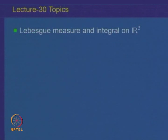Welcome to lecture 30 on measure and integration. In the previous lectures, we had defined the product measure on product space. In this lecture, we will specialize that construction on the set R², which is a Cartesian product of the real line with itself, with the sigma algebra being that of either Borel sets or Lebesgue measurable sets, and the measure being the Lebesgue measure. The topic for today's discussion is Lebesgue measure and integral on the space R².